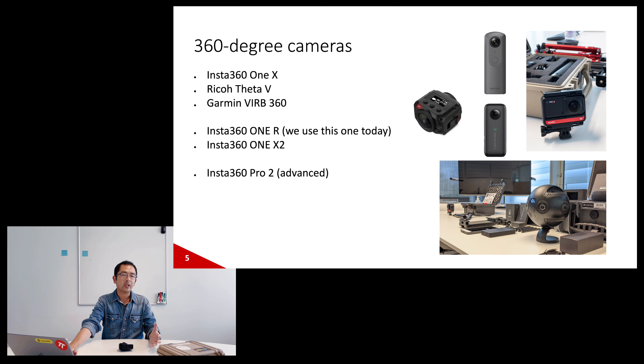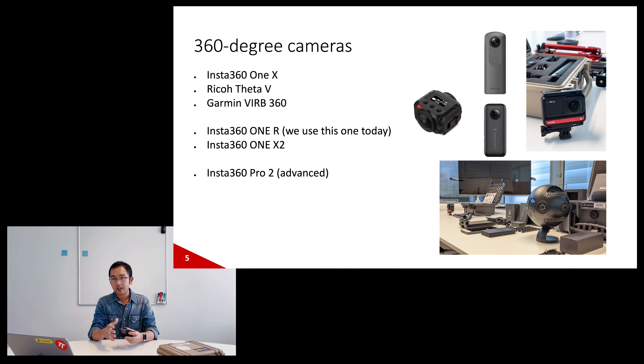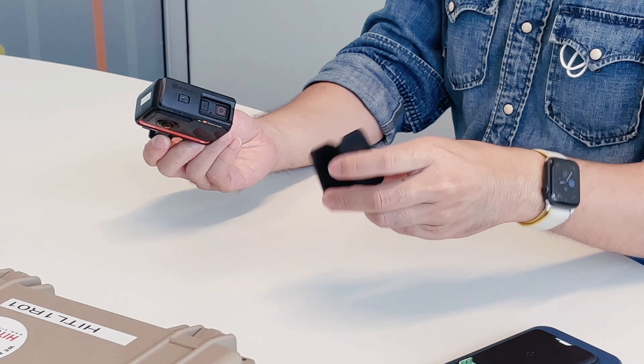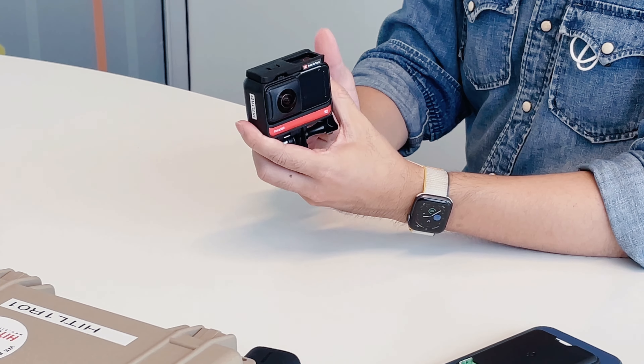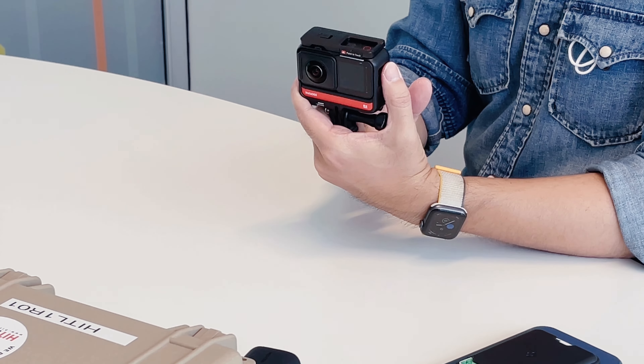You can choose a camera depending on your budget or actual need, but essentially they all produce 360 footage. One common feature of all 360 cameras is multiple lenses — the one I have here has two lenses, one on each side. These are fisheye lenses extruding from the body. Each captures 180 degrees of the scene, and when put together 180 plus 180 becomes 360 — that's how the name comes about. Bigger cameras have more lenses but together they still cover the same 360 degrees.